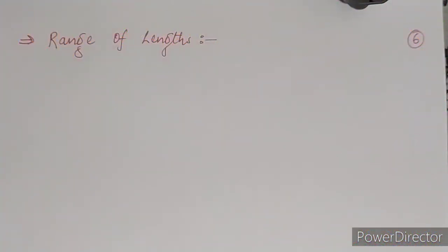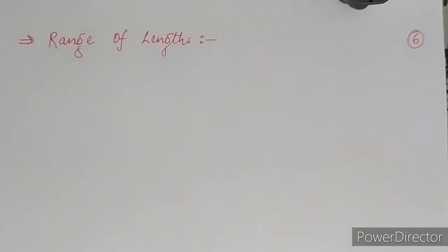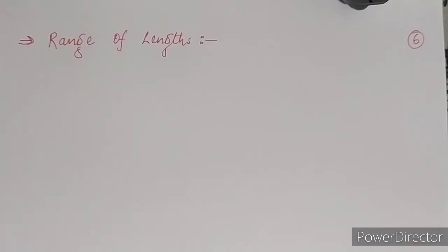Good morning students. Today we are going to start our sixth lecture of chapter number two, that is Units and Measurement. In our previous lecture we discussed about the size estimation — the size of a molecule — in which the oleic acid film method was used.